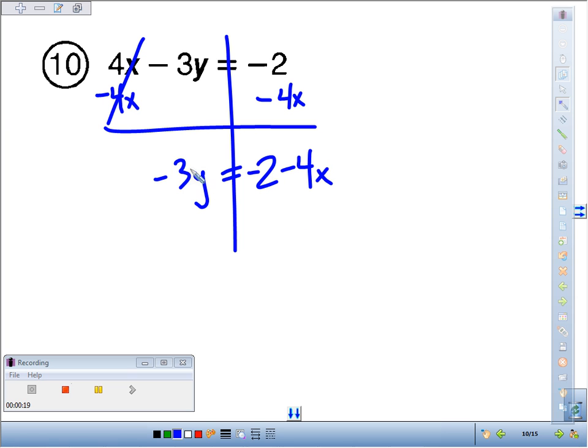So our next step, the inverse of times negative 3. We want to divide by negative 3 on both sides.